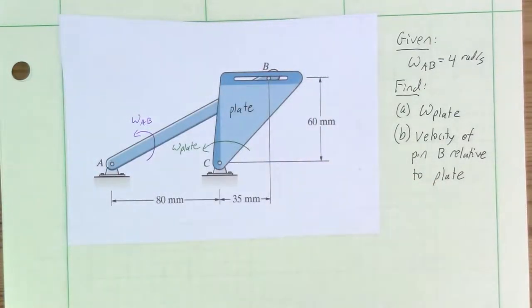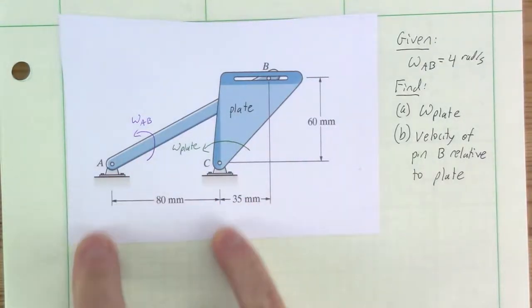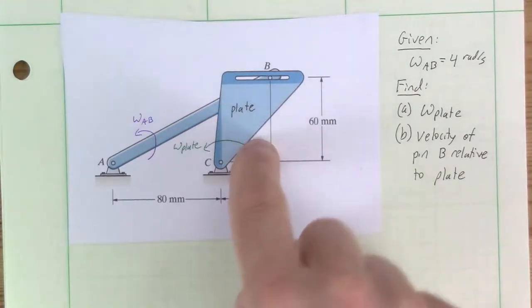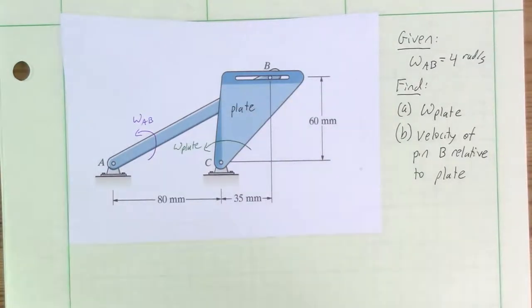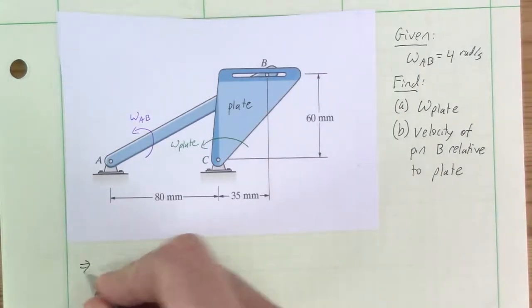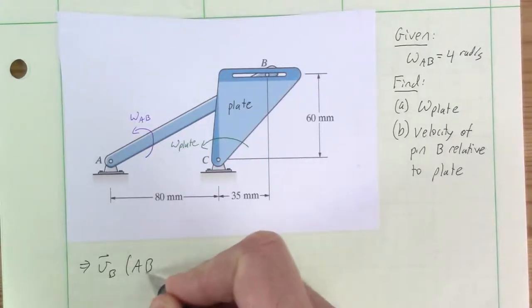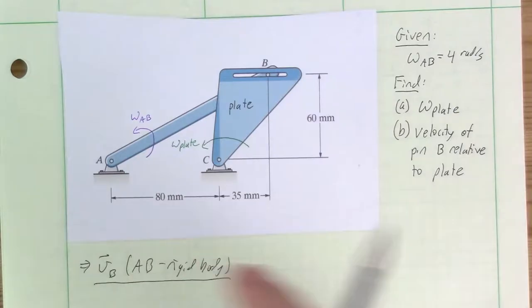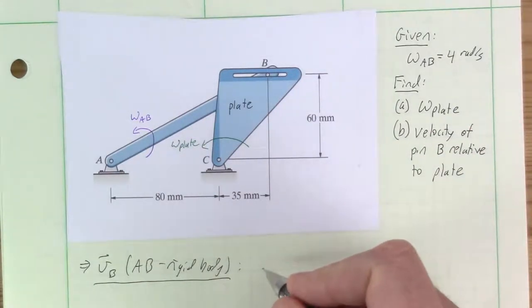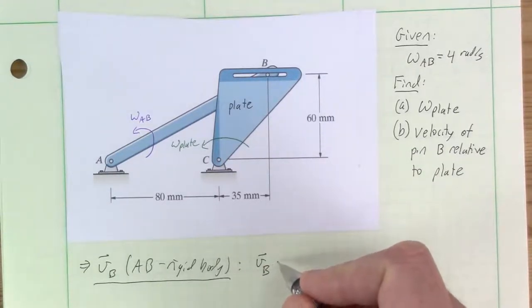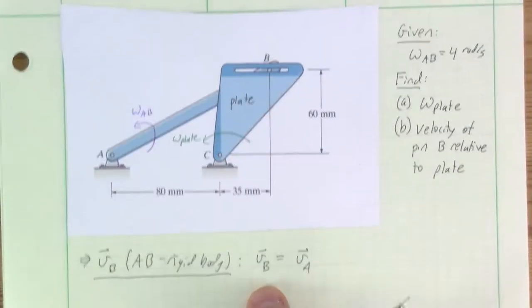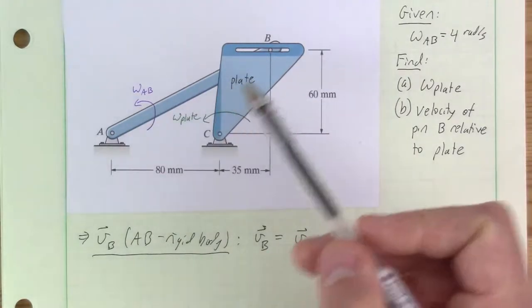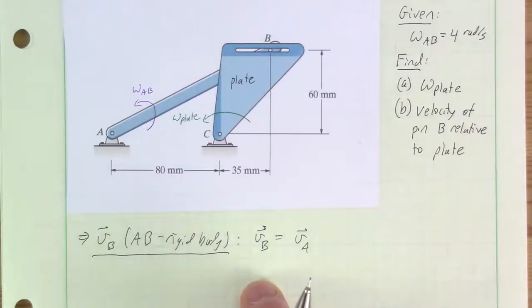In this problem we have a big plate with a slider contact where A and B are on the same bar, pinned to the fixed coordinate system at A, with a slider contact at B. We want to determine, given the rotation rate of bar AB, the rotation rate of the plate and the velocity of B relative to the plate. The first step is recognizing that AB is a rigid body.